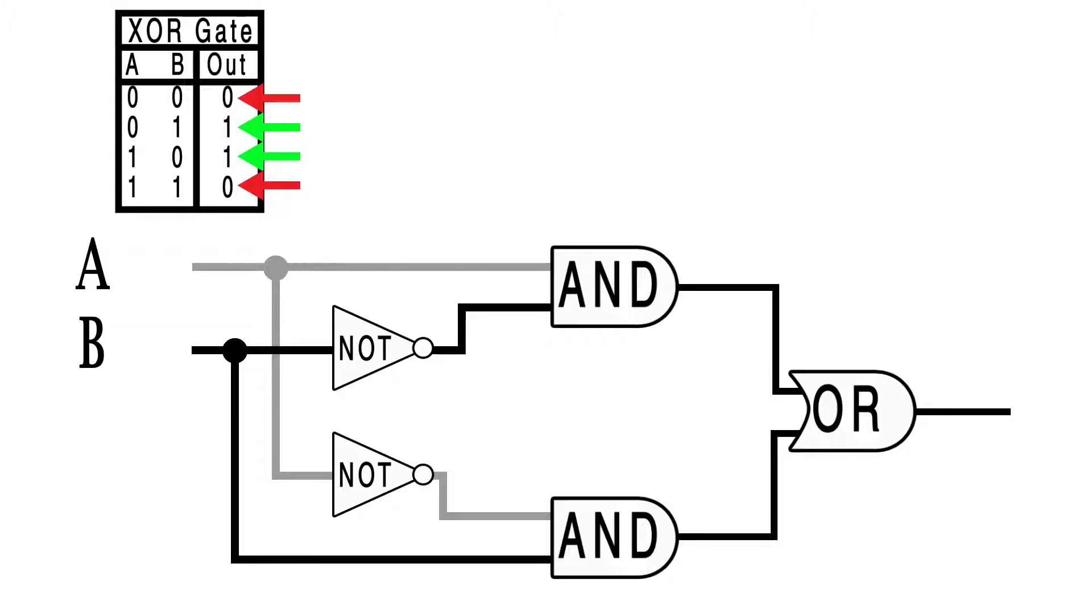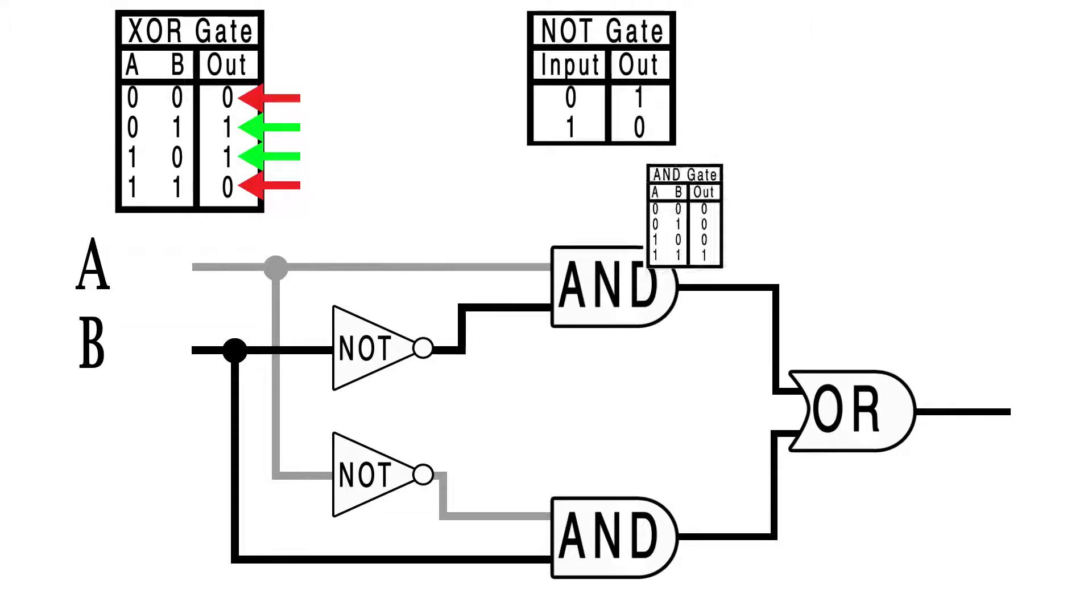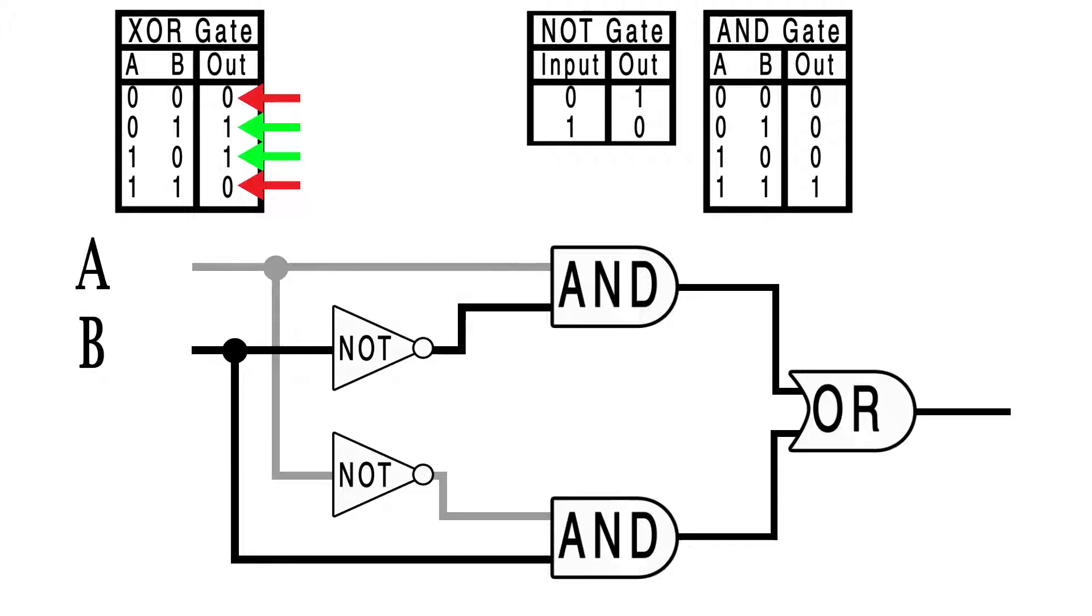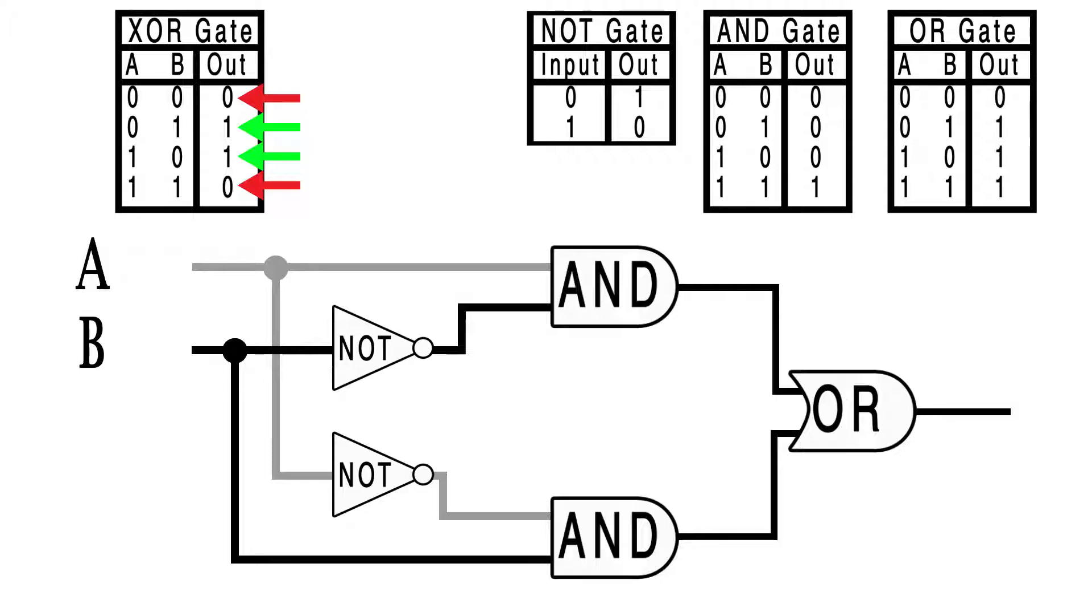To refresh, this triangle is a NOT gate, these D shapes are AND gates, and this D with a curved spine is an OR gate. And here's what they need to be satisfied. Now also keep in mind that wherever there's a dot here, it means the paths of these two conductors do intercept. They are connected. If there isn't a little dot, then the paths don't intersect. One crosses over the other, but they don't touch. To make this easier, I'll change their colors so that we can know these are two separate paths. Now, if you want, you can pause the video and see for yourself how this arrangement satisfies our XOR gate. Otherwise, keep playing and we'll walk through every combination together.